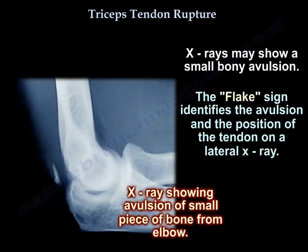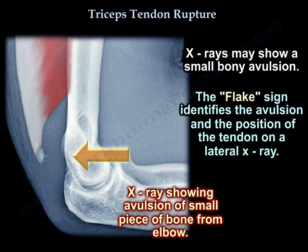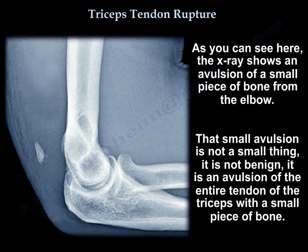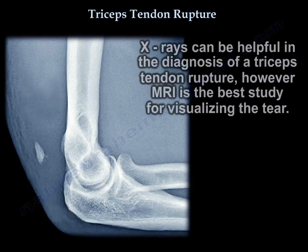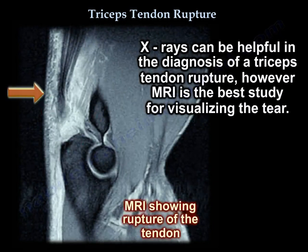X-ray may show a small bony avulsion. The flake sign identifies the avulsion and the position of the tendon on a lateral X-ray. As you can see here, the X-ray shows an avulsion of a small piece of bone from the elbow. That small avulsion is not benign — it represents an avulsion of the entire triceps tendon with a small piece of bone. X-rays can be helpful in diagnosis; however, MRI is the best study for visualizing the tear.